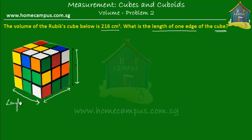If this is the length, then it's equal to the breadth. The length and the breadth are the same size, and that's also equal to the height. So the height is also the same size as the length and the breadth.